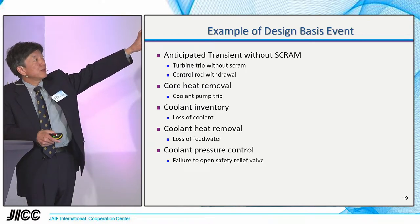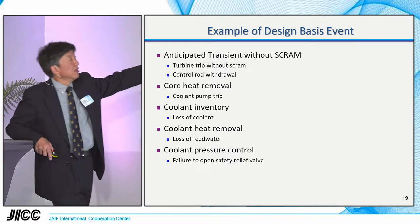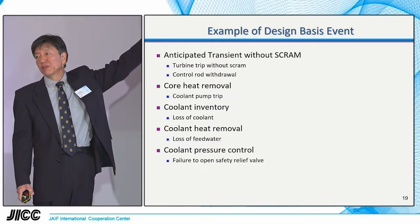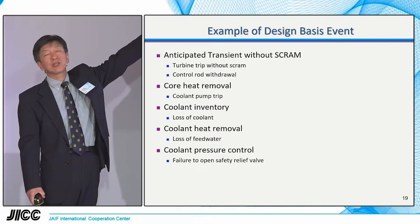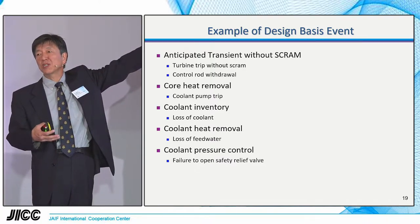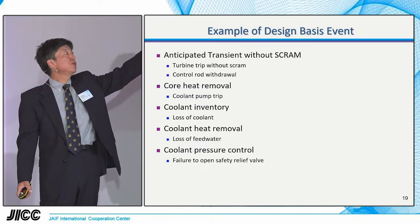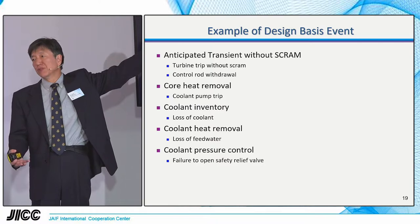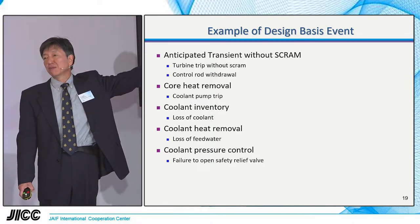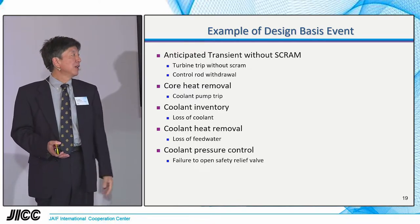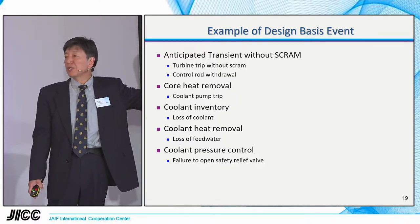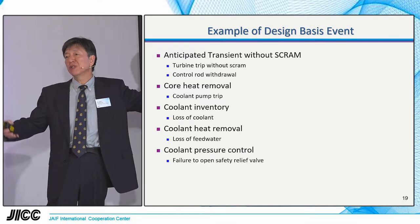We can now come to the definition of design basis events. For controlling power: anticipated transient without SCRAM is used for safety analysis; turbine trip without SCRAM or control rod withdrawal are examples of failure to control reactor power. For core heat removal: coolant pump trip is a good example. For coolant inventory: loss of coolant — pipe break — is an example. For pressure control: failure to open safety relief valve could escalate pressure.